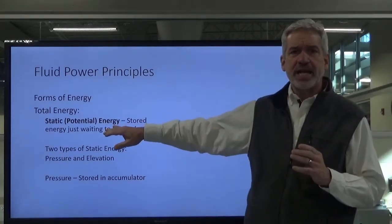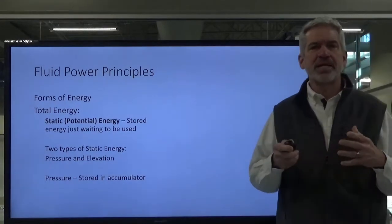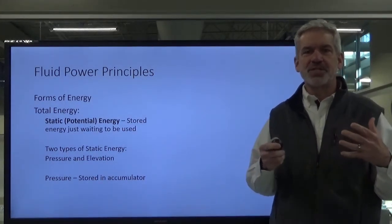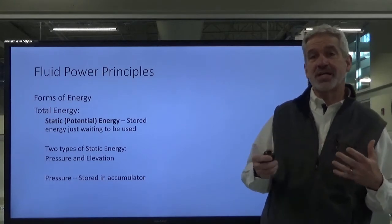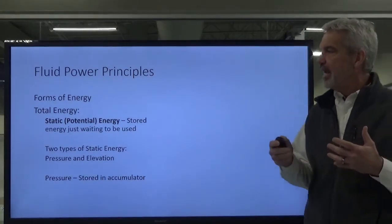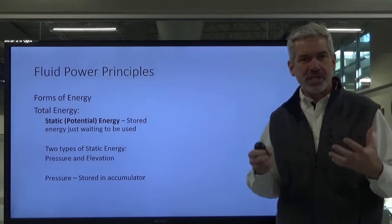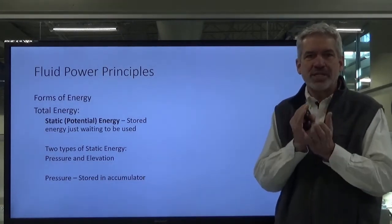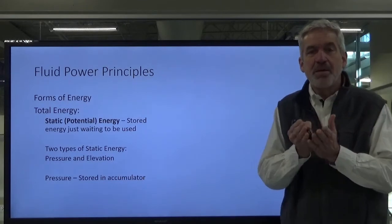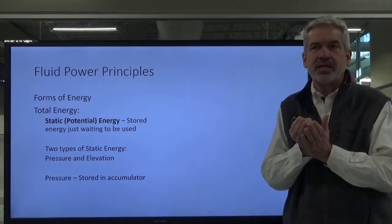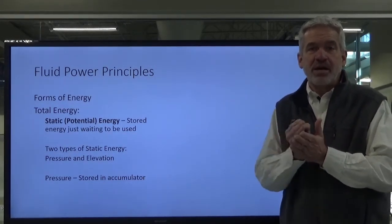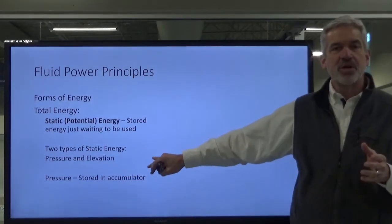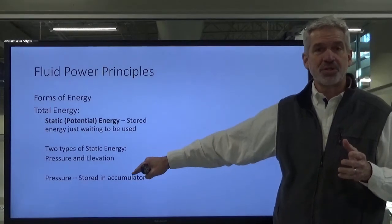The first type is static energy. Most of you are probably familiar with this from your high school physics or physical science class. Static energy, or potential energy, is stored energy — it's not in motion. It's stored, it's static, it's staying still. But it still has the potential to become moving energy. There are two types of static energy: one comes from pressure and the other comes from elevation.